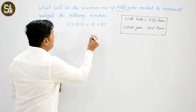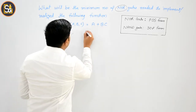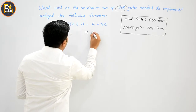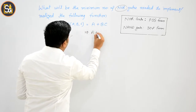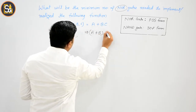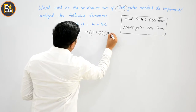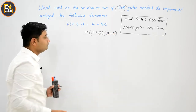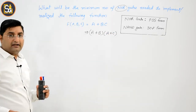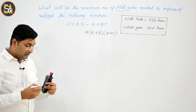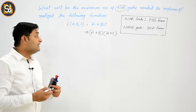Now, talking about conversion: using the distributive law, a + bc can be written as (a + b)(a + c). So we convert the given SOP expression into POS form first.